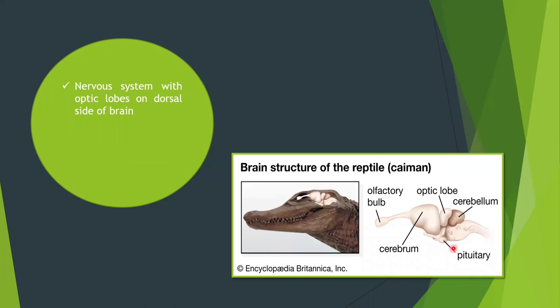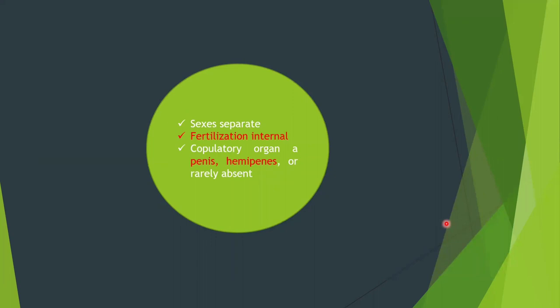The nervous system has optic lobes on the dorsal side of the brain and an enlarged cerebrum. They have 12 pairs of cranial nerves. Reptiles have separate sexes; fertilization is internal — sperms enter the female reproductive tract to fertilize eggs in the oviduct. A copulatory organ — penis or hemipenis — is present in some species but absent in others.